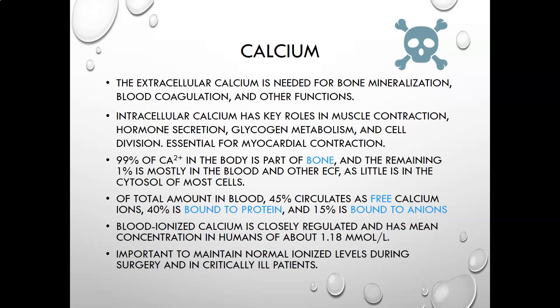Next we have calcium. Extracellular calcium is needed for bone mineralization, blood coagulation, and other functions. Intracellular calcium's roles are in muscle contraction, hormone secretion, glycogen metabolism, and cell division. It is essential for myocardial contraction — you must have enough calcium reaching the myocardium to contract, otherwise problems arise. 99% of calcium in the body is part of bone, and the remaining 1% is mostly in the blood and other extracellular fluid, with little in the cytosol of most cells except muscle-type cells.